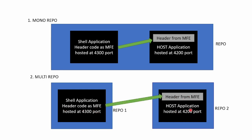So the host application will consume the shell application's header code. The header in the host application is coming from the MFE that is micro frontend hosted at port 4300. If we compare both repo structures, we find that the behavior is not different — one application called shell application is hosted on one server, and there is a host application hosted on another server. The host application is consuming the shell application code. The condition is only that the shell application should expose its code so that the host application can consume it. The only difference between the first and second case is the number of repositories.